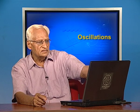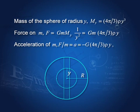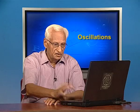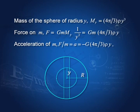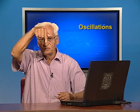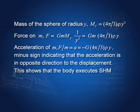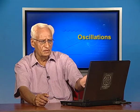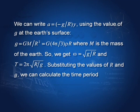The mass of the sphere of radius y is M_y = (4π/3)ρy³. By Newton's law of gravitation, the force on m is F = G·m·M_y/y² = G·m·(4π/3)ρy. This force is directed downward while the displacement y is upward, so the acceleration F/m is proportional to displacement y and opposite in direction. This confirms the motion is simple harmonic.